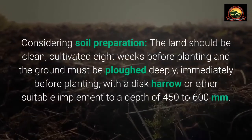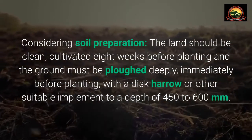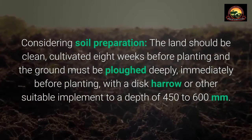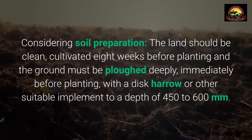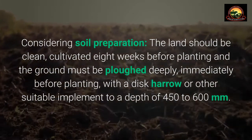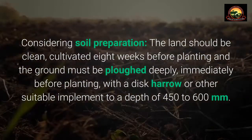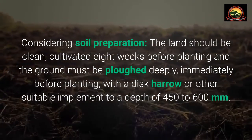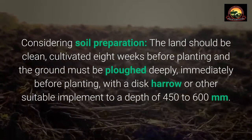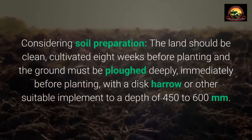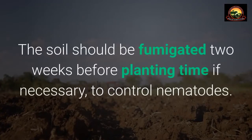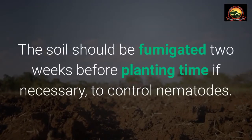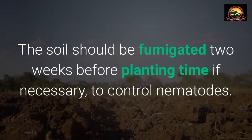Considering soil preparation, the land should be clean, cultivated 8 weeks before planting, and the ground must be plowed deeply immediately before planting, with a disc harrow or other suitable implement to a depth of 450 to 600 millimeters. The soil should be fumigated 2 weeks before planting time if necessary, to control nematodes.